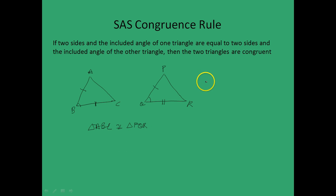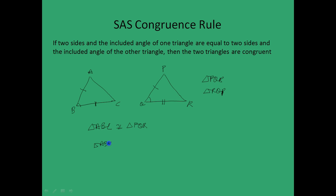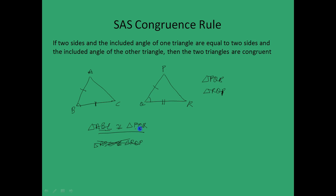Now, triangle PQR is the same thing as triangle RQP. But we cannot write triangle ABC is congruent to triangle RQP — this is simply wrong. Why is that wrong? Because when writing congruency the order of the vertices is important — that is how you get to know the corresponding sides. Because the corresponding side to AB in the second triangle is PQ, A and P occur at the same position — A first and B second. And because the equal angles are angle B and angle Q, B occurs in the middle and therefore Q has to necessarily occur in the middle. So there is a certain order which needs to be followed with regard to congruency notation.